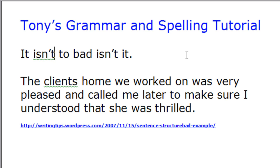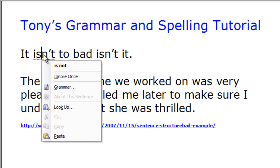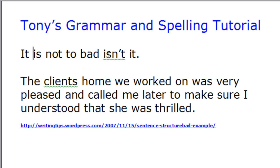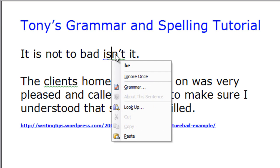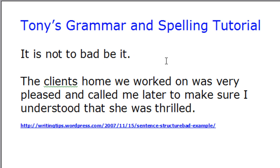Now it's giving me a green squiggly line, because what that's telling me is that the grammar is bad. I'm going to right-click on this and it's saying the word 'isn't' should maybe be 'is not' — 'It is not too bad, isn't it.' So let's change it to that. Now it's flagging 'isn't' again and suggesting we change that as well. I right-click and it gives 'is not too bad, be it' — which sounds weird, but the point I'm trying to make is not to give you the perfect sentence, but to show you that you have grammar options. Again, the point is you can check spelling and grammar.